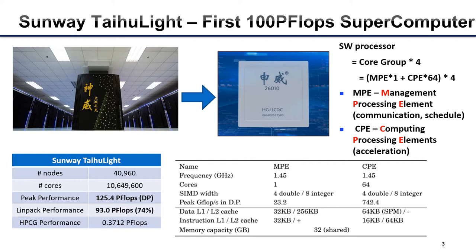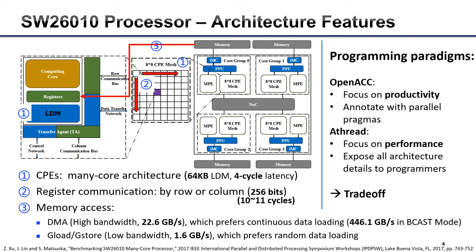There are a lot of supercomputers in our world, and among them, the Sunway TaihuLight is an important platform. Sunway TaihuLight was the first supercomputer surpassing 100 petaflops. It is powered by 40,960 Sunway 26010 processors. There are three unique features of the Sunway 26010 processor. First, CPEs are a many-core architecture.